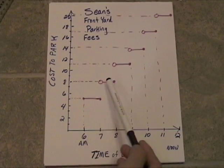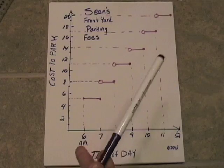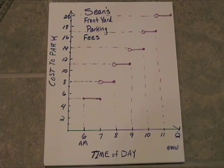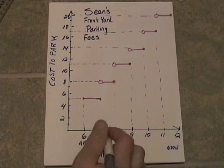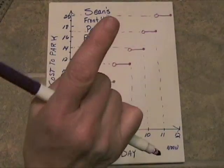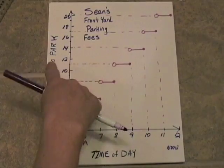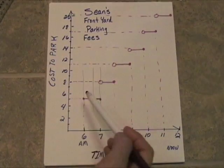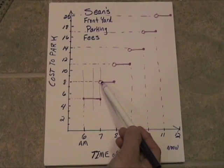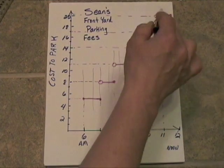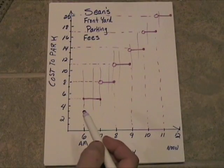Now the question is: is this a function? The title of the lesson is step function, so you're thinking it's a function, but it's got to pass the vertical line test. Does every single one of these times on the independent axis get paired with one and only one value on the dependent axis? Yes — you might think it's going to fail, but that's an open circle and this is a closed circle. By George, it does pass the vertical line test the whole way through. This is a function.